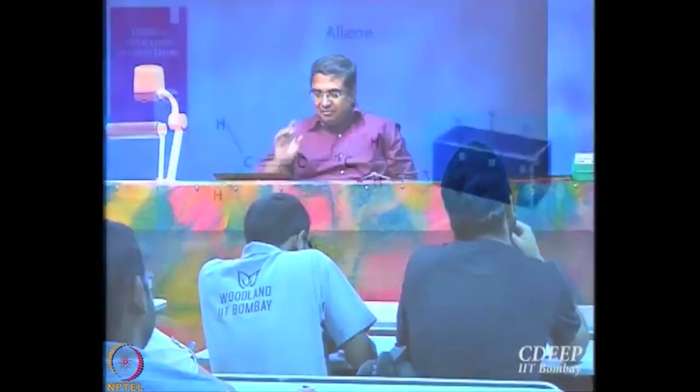What are the symmetry operations in allene? C2 — where are the C2s? This is the C2; this is very easy and this is the principal axis because it is a unique C2. Now there are two other C2s. Where are the other C2s? You see it very nicely if you hold it like this.